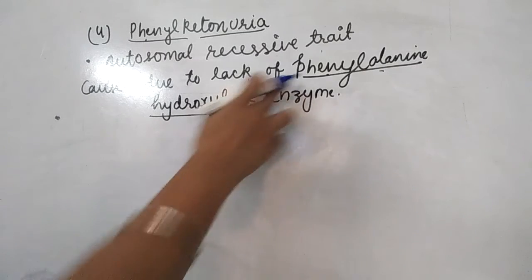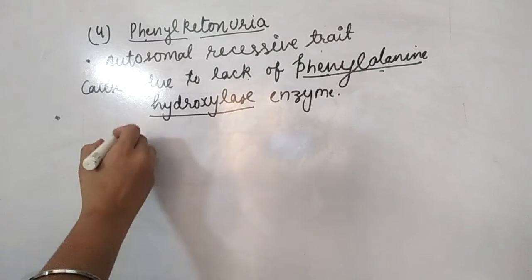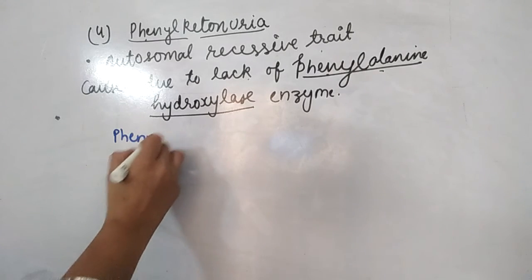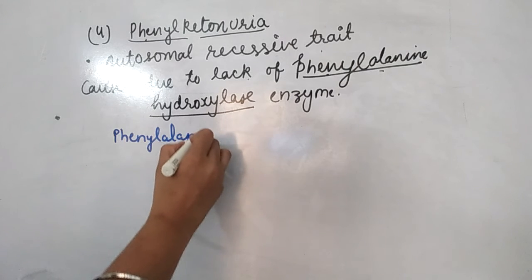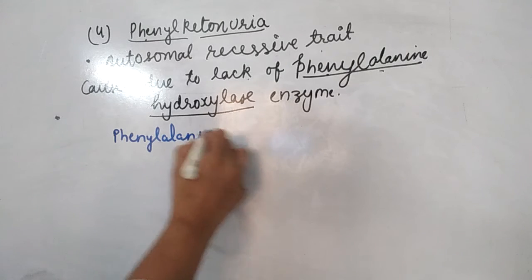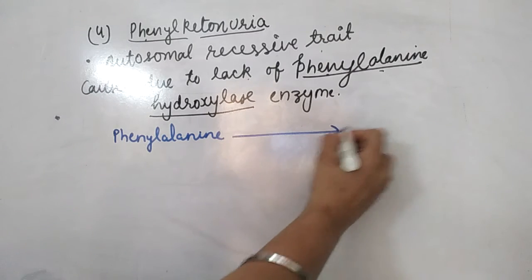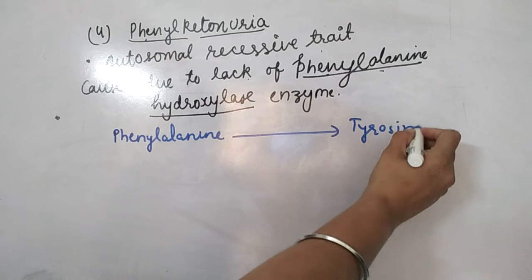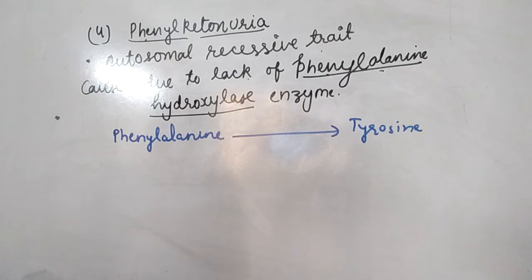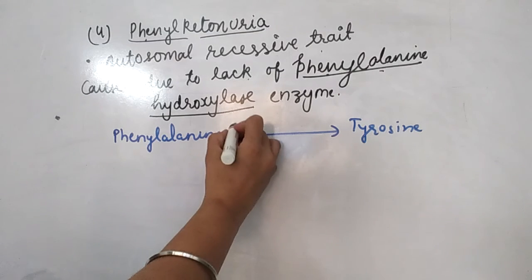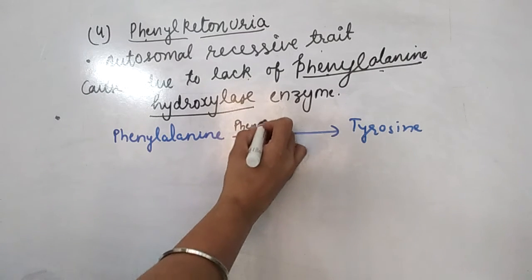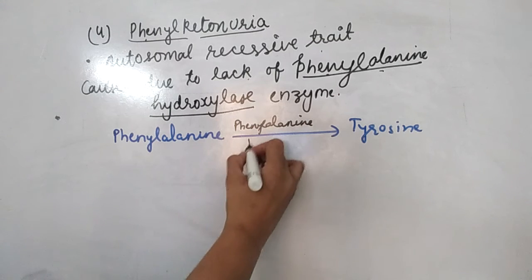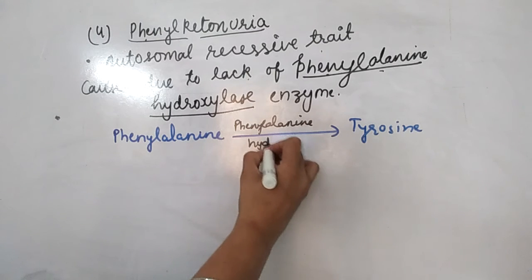What is the function of this enzyme? Phenylalanine hydroxylase enzyme converts phenylalanine into the amino acid tyrosine.